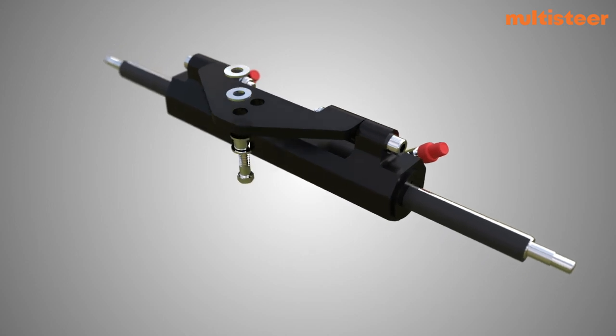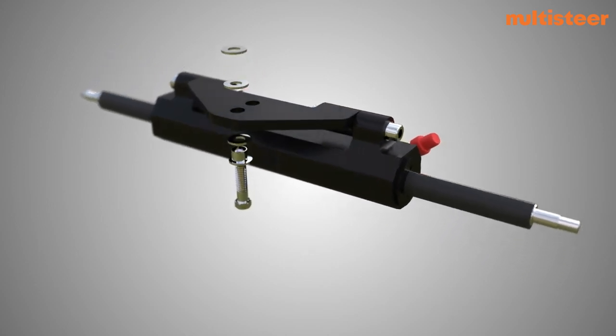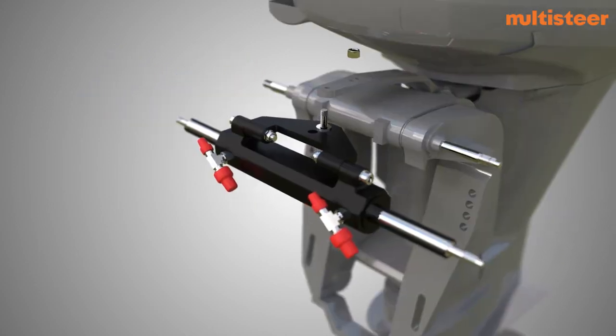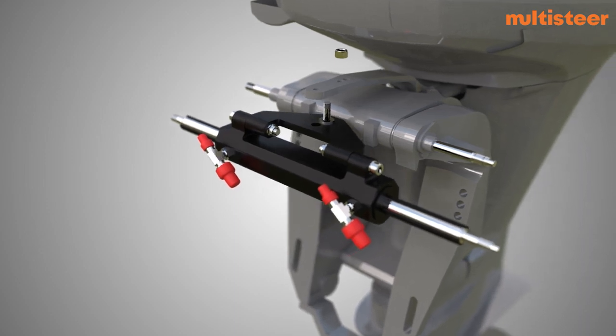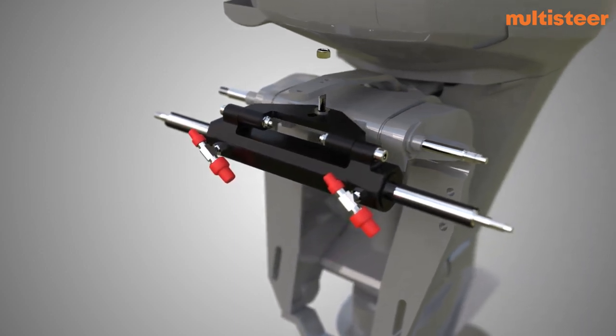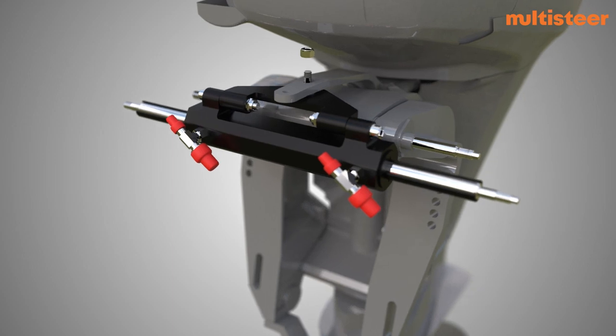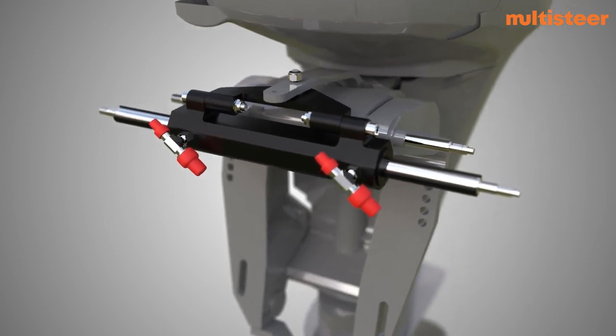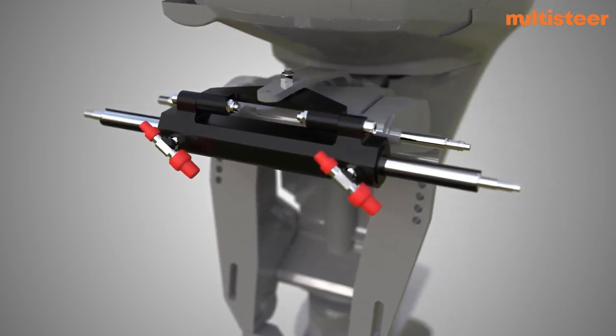Assemble the tiller hex stud assembly into the tiller plate of cylinder. Position the engine straight so that its engine arm is perpendicular to the transom. Connect the tiller plate of cylinder to the engine arm by screwing the hex stud. Tighten nylock nut lightly.